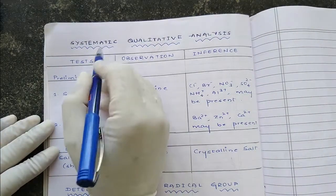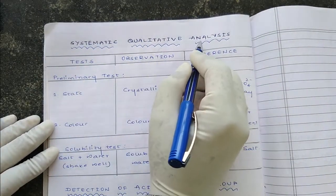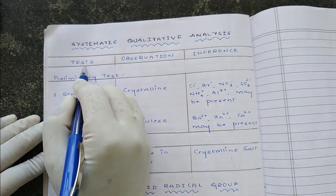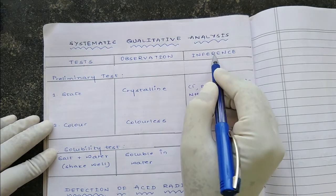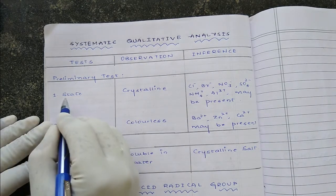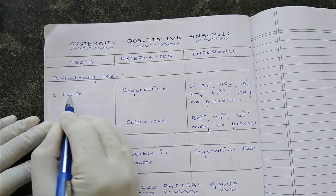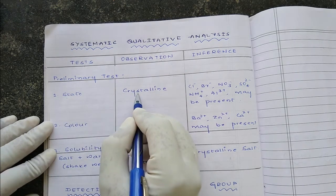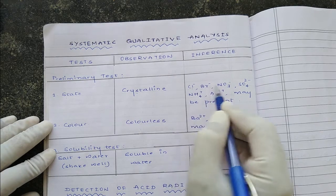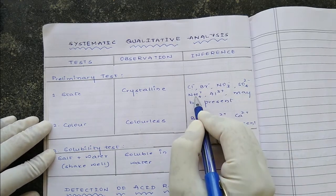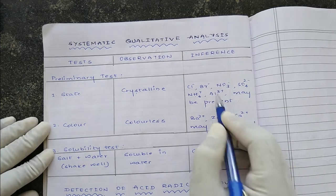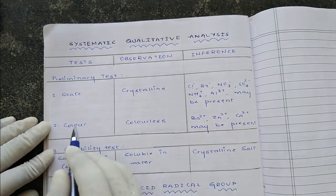The heading is systematic qualitative analysis. We are going to make three columns: test, observation, and inference. We started with preliminary tests. The first was state — the state of the given salt was crystalline. The inference is that chloride, bromide, nitrate, sulphate, ammonium, and aluminium 3+ may be present.